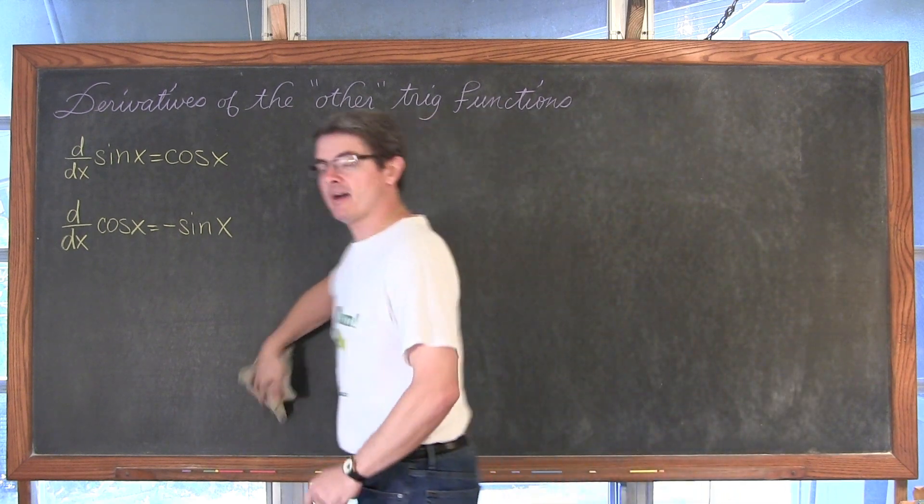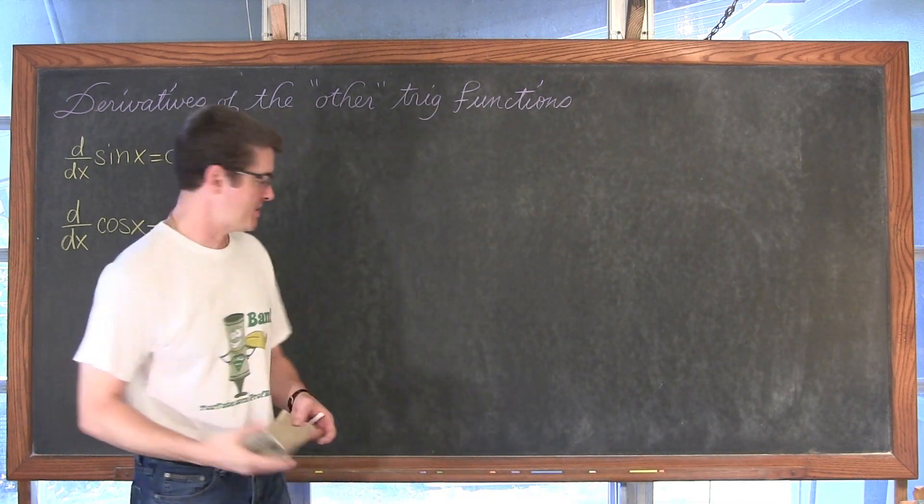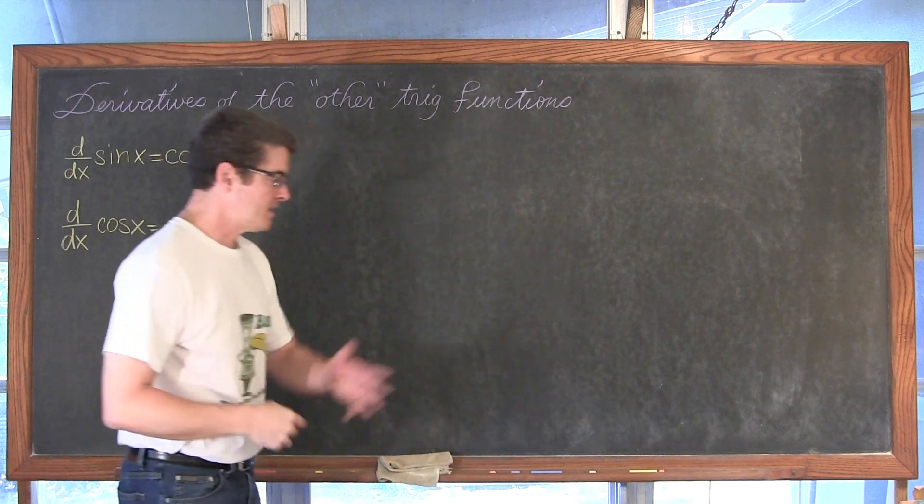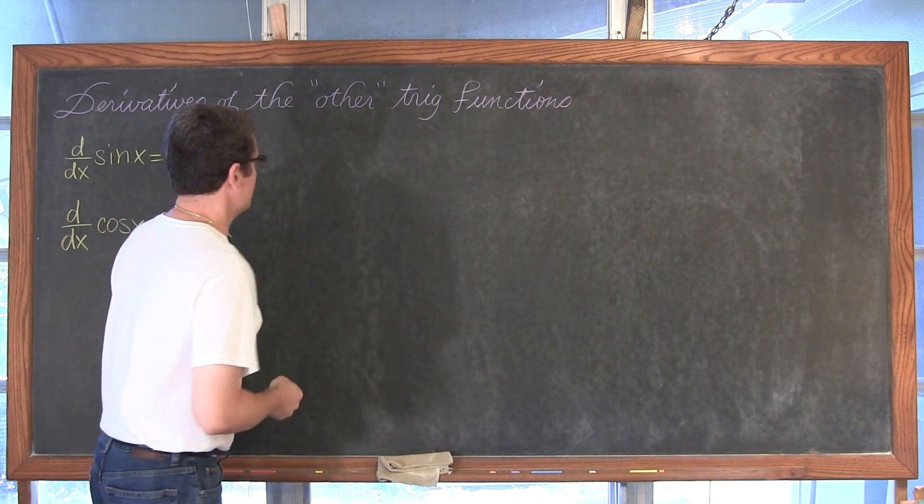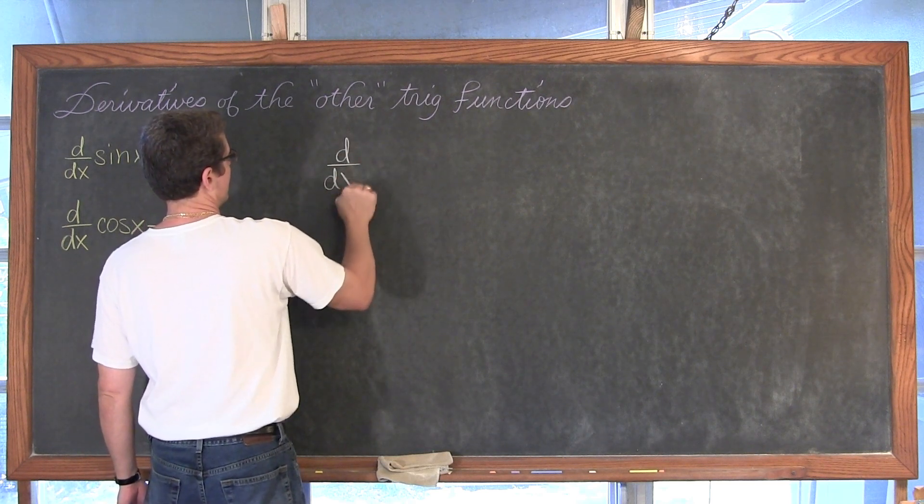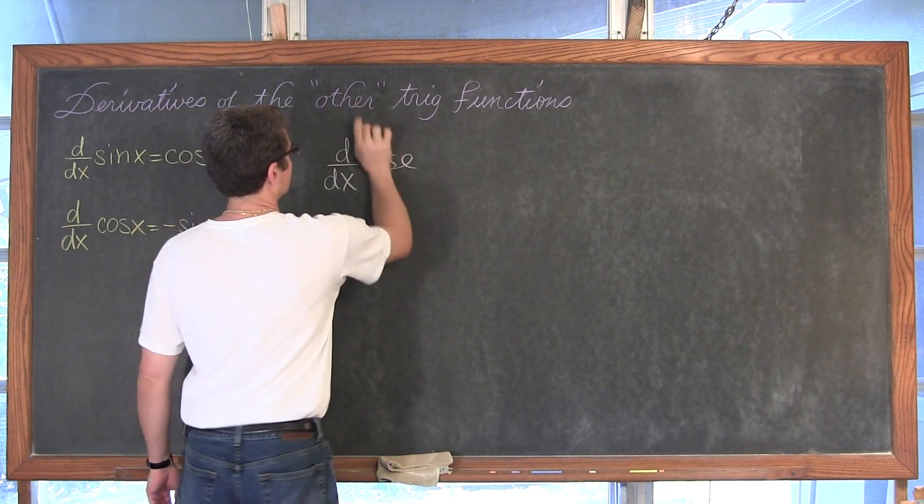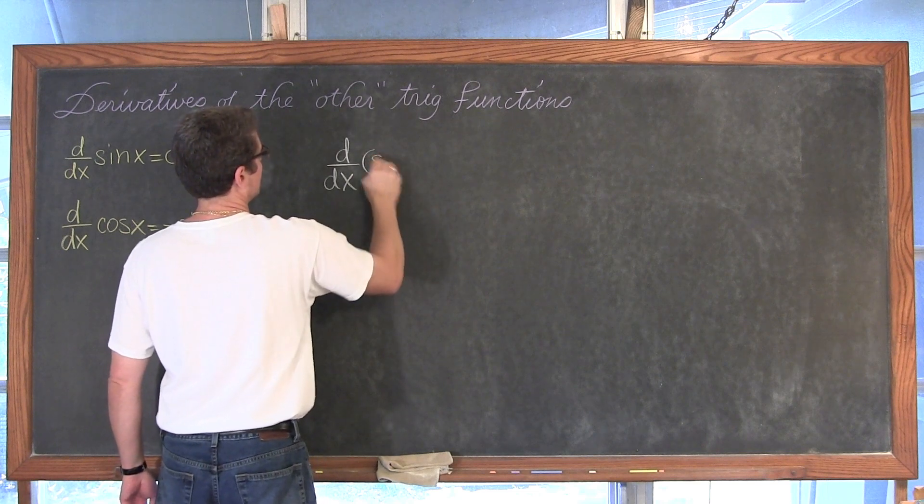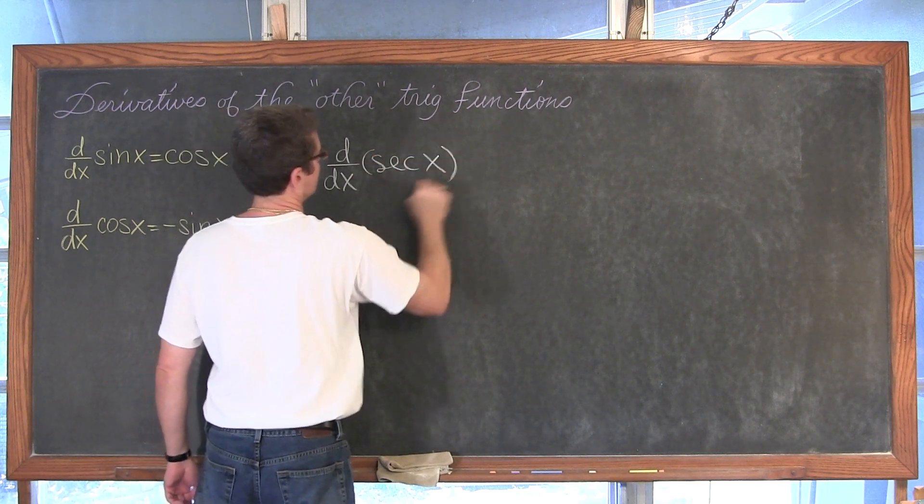And of course we can do that same kind of work through the cotangent function. But I am not going to show you that again, right? It is just going to be the quotient rule again. How about if you need to find the derivative with respect to x of secant of x.